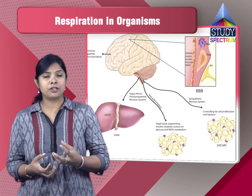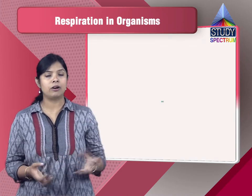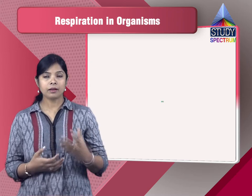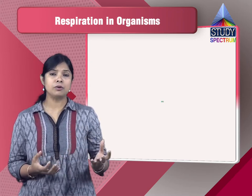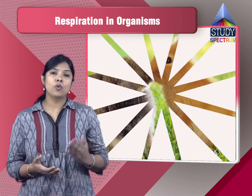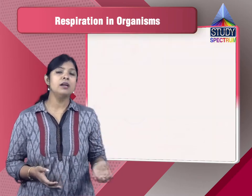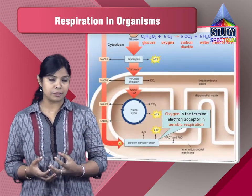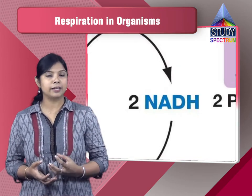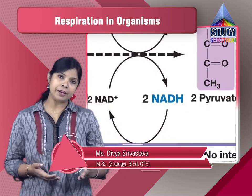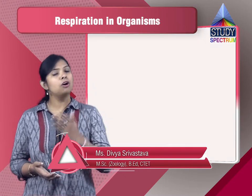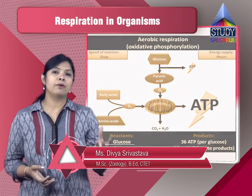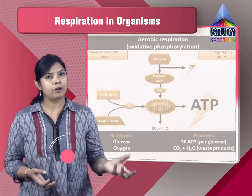What is respiration? When oxygen is transported via blood vessels to the cells, it breaks down glucose into carbon dioxide and water and releases energy. The process of breakdown of glucose in the presence of oxygen with release of energy is called cellular respiration. This cellular respiration takes place in all organisms — whether plants or animals. Respiration is of two types: one is aerobic respiration and another is anaerobic respiration. In aerobic respiration, glucose breaks down in the presence of oxygen and releases energy.